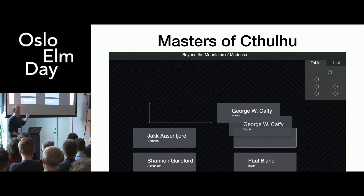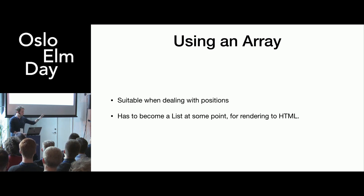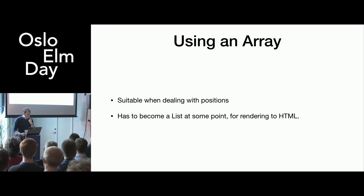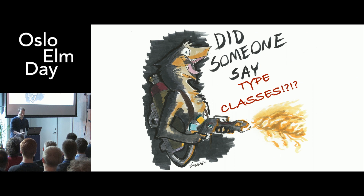When talking about table positions, to me that is very naturally an array — just take one index and switch it with another. It's a very natural match. The problem, though, is that if I represent something in an array, at some point it has to become a list, because the only thing I can render as HTML is lists or actual HTML. That can be tedious and can be a performance problem when you do this enough. Some might say this is what type classes are for — or interfaces, or protocols, or whatever form of ad hoc polymorphism you want — and that's true, it is a valid use case for that.